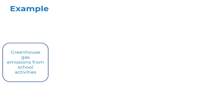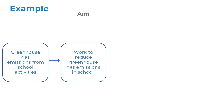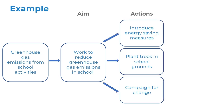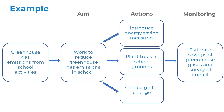In this example we have identified that there are greenhouse gas emissions associated with activities in our school and we aim to reduce those emissions. We could do this by introducing energy saving measures, planting trees in our school grounds and campaigning for change. We could measure if these actions achieve our aim by estimating the savings of greenhouse gases and surveying the impact on the behaviour of pupils and staff.